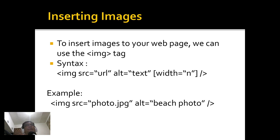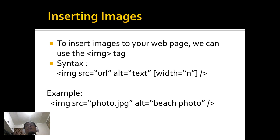To insert images to your web page, we can make use of the img tag. The syntax will be img, followed by the attribute src (source) equal to the URL — it can be a file name or the address of an image — then alt, the alternate text, where you can place a description of the image. Optionally, you can also specify the width and height. For example: img src equals photo.jpg, alt equals beach photo.